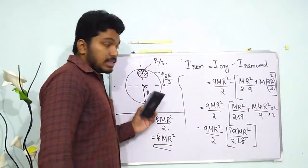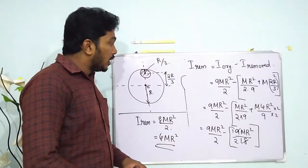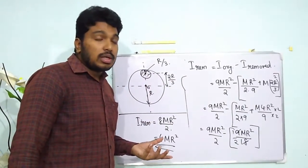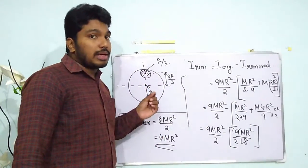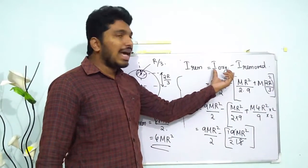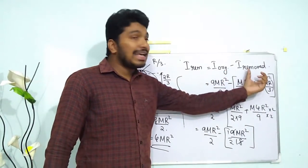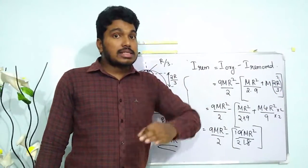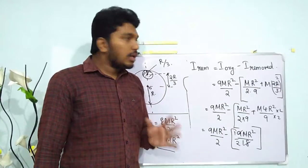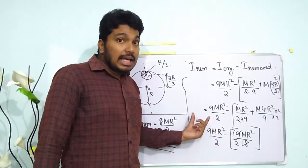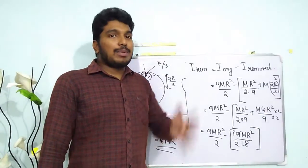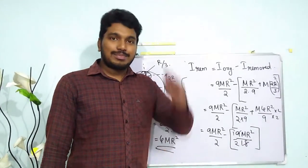So as I told you, this is a very important question. Wherever the mass is removed from, the method to solve remains the same. Always remember: I_remaining = I_original − I_removed, about the axis where we need to determine the moment of inertia. Please remember this — if you have any doubts, do comment below and I will be happy to help you out. Thank you.